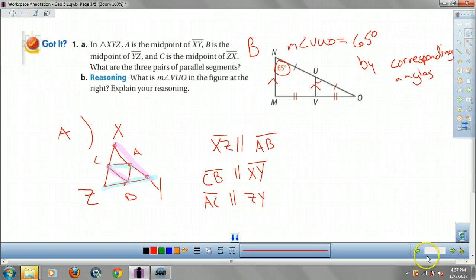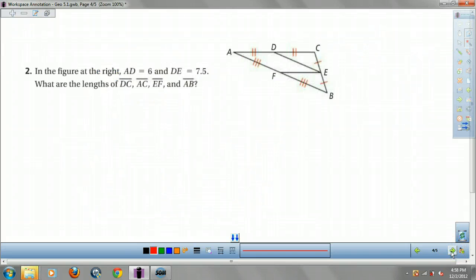Okay. We're almost there, guys. 60% of the way. Okay. Suppose AD is 6. DE is 7.5. What are everything else? Okay. Start with DC.